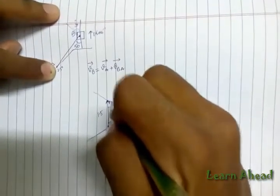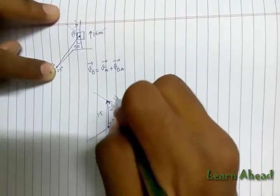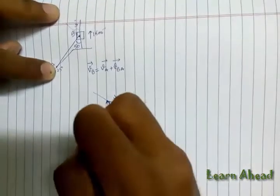This is the complete vector diagram, where this vector is showing the velocity of A, this vector is showing the velocity of B with respect to A, and this is the velocity of B.